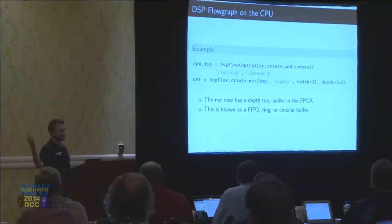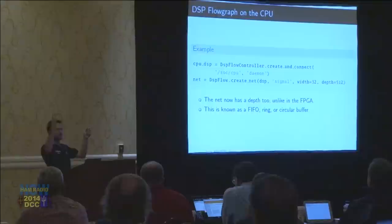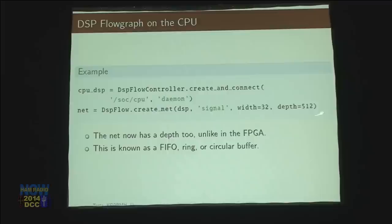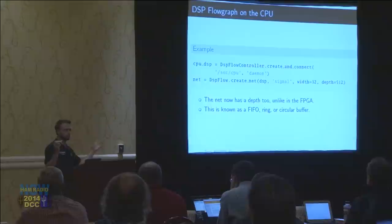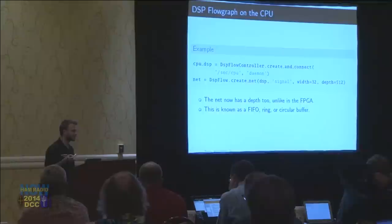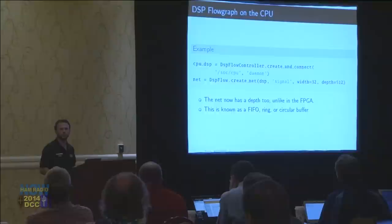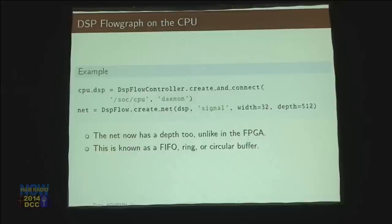We need to have a DSP flow graph running not only on the FPGA but also on the processor itself. This one is backed by memory — instead of being backed by registers in the FPGA, we store the samples in a piece of RAM. I can store up to 512 samples, and these are the numbers you adjust to control your latency. The more samples you store before sending stuff out, the more latency you have. For example, with 10 samples at one microsecond per sample, you'd have 10 microseconds of latency — a very clear measurement.